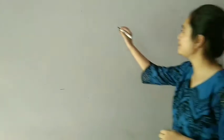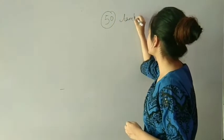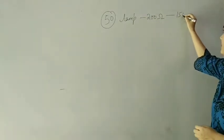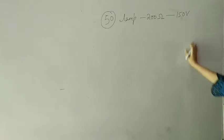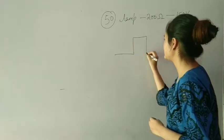Next question: a lamp of 200 ohm resistance is used. We need 150 volt. How much resistance should be joined in series with this lamp?